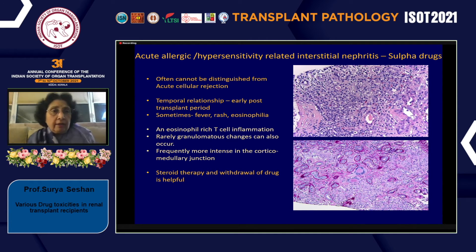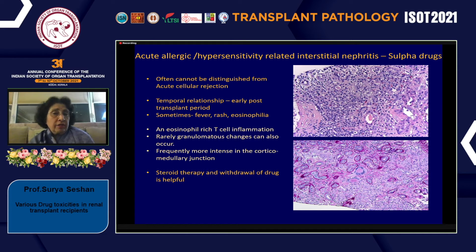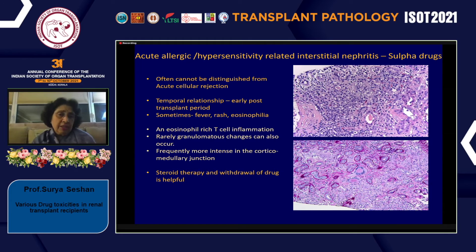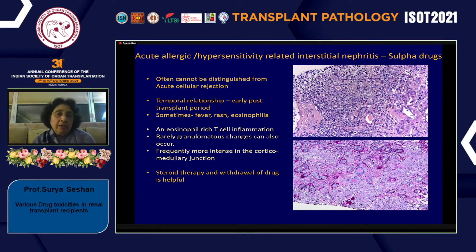Regarding acute allergic or hypersensitivity-related interstitial nephritis in transplants due to sulfa drugs or other prophylactic drugs: these can cause an allergic reaction rich in eosinophils or granulomatous inflammation. When it is a pure eosinophil-rich T-cell reaction, it cannot be differentiated from T-cell-mediated rejection; however, steroid therapy helps minimize or resolve this. These patients may present with fever, rash, or eosinophilia, though this is not a constant finding.